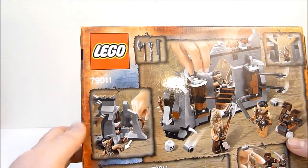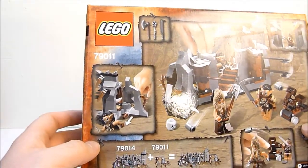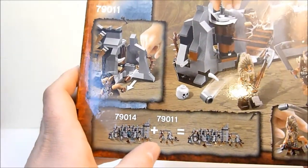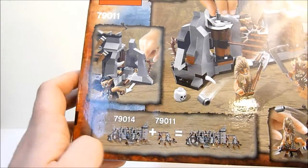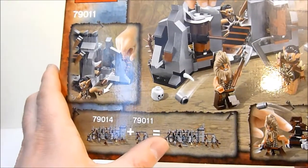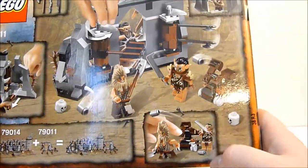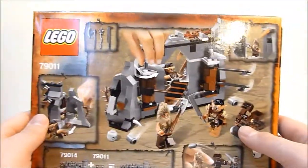It's got flick fire missiles for some reason, and you can attach it to the larger set, which I did not yet get, but that's pretty cool. I like the modular capabilities of that. And you can see it's got a little catapult and things like that.